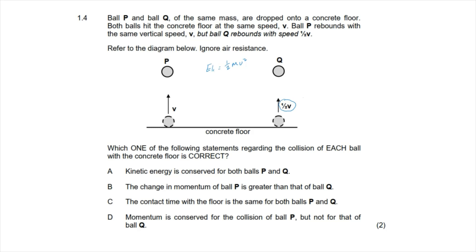Option B: the change in momentum of ball P is greater than that of ball Q. Change in momentum equals mass times (final velocity minus initial velocity). For ball P, taking upward as positive, the change in momentum is −2mv. For ball Q, the final velocity is −½v and initial velocity is +v, giving a change in momentum of −3/2 mv. Since 2mv > 3/2 mv in magnitude, the correct answer is option B.